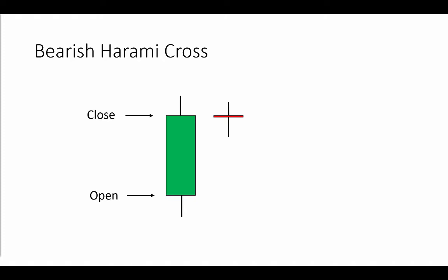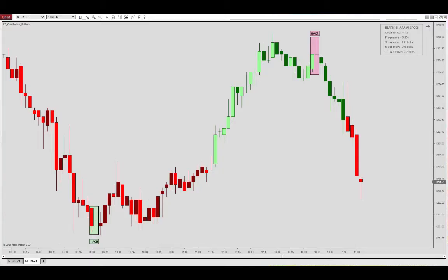For the bearish harami cross: two prior bars are up closes, this is a large body bar, this is a doji, and the body is contained within the large range. The open is at or above the close, subject to the one tick rule which allows it to also open one tick below the close. Now let's look at this in the charts.